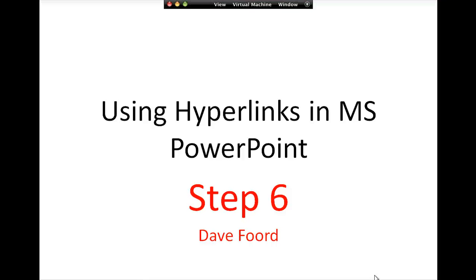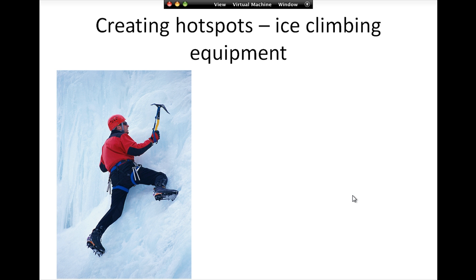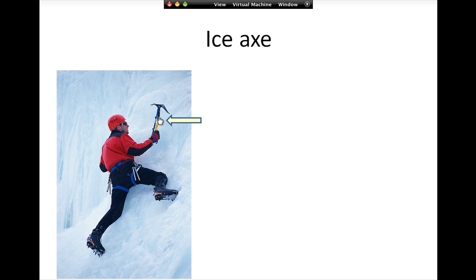This is step six in a series of presentations on how to use hyperlinks in Microsoft PowerPoint. In this tutorial we're going to look at how we can use hotspots over an image. Here I have my image of a person ice climbing, and if I click on the ice axe it will take me to a page with information about the ice axe.